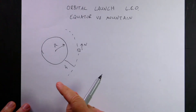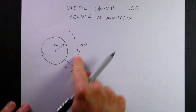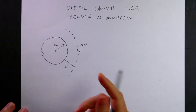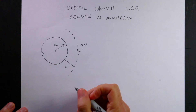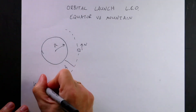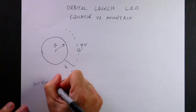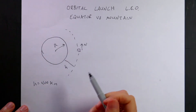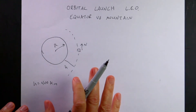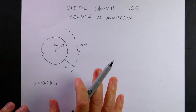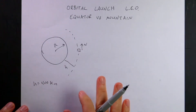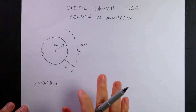Okay, so a couple of parameters. This is the Earth, and here's some object orbiting it at some altitude H above it. Low Earth orbit is a range, but I'm just going to say H is 400 kilometers. So let's think about launching a spacecraft into low Earth orbit from the surface of a perfectly spherical, flat Earth that's not even rotating.